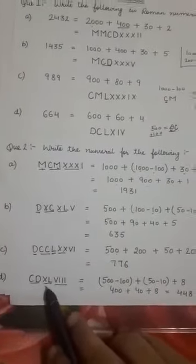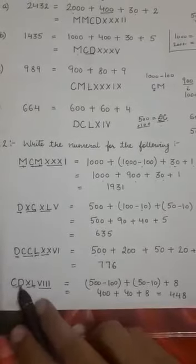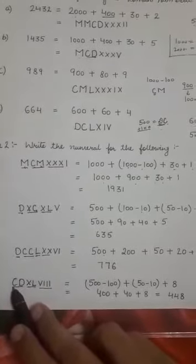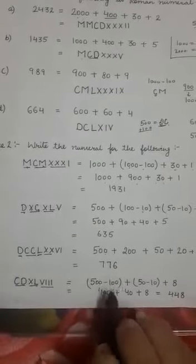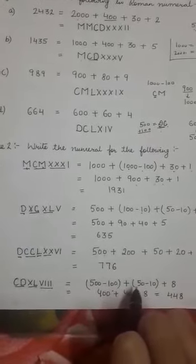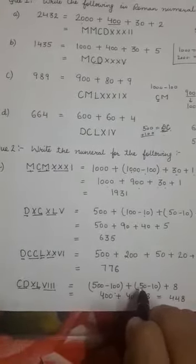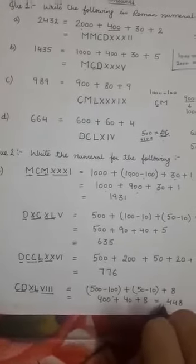Next. CDXLVIII. For CD, as the smaller symbol is on the left of the larger symbol, we have to subtract 100 from 500. So 500 minus 100. Next is XL. Again, X is on the left of L. That means we have to subtract 10 from 50. And we will get 40 plus 8. The answer is 448.